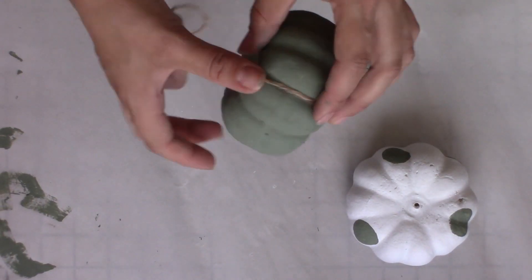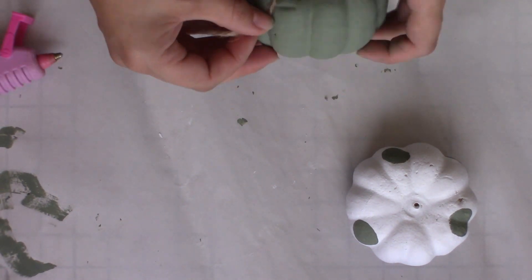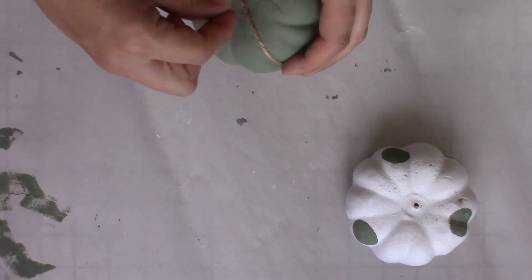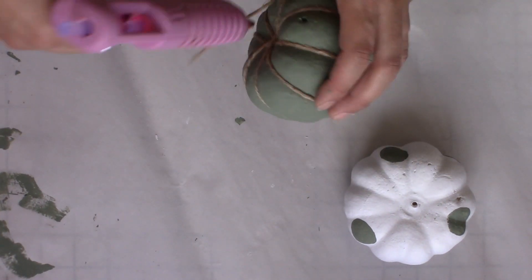On the moss pumpkin, I took some jute string and just used my hot glue gun to keep everything in place. I used the jute string to accent all the details of the pumpkin.